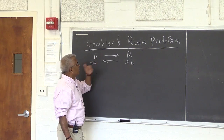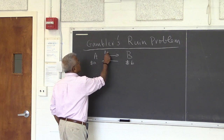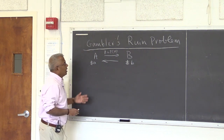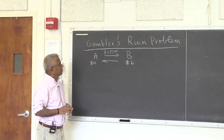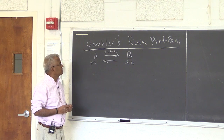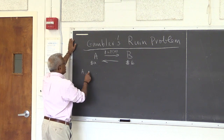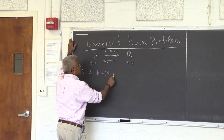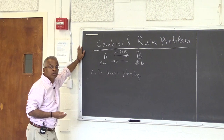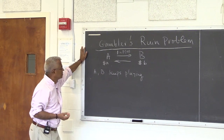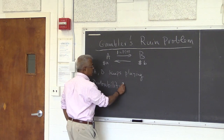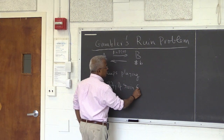The basic game is you toss a coin. P is the probability that a head occurs and A wins. So A will win each game with probability P, and B wins with probability Q. The problem is: A and B keep playing. What is the probability that either A or B is ultimately ruined? So what we need is the probability of ruin, let's say for A.